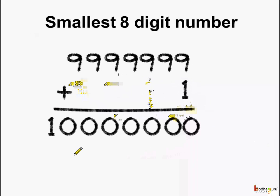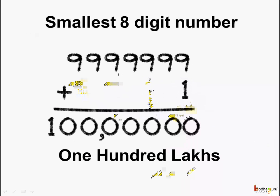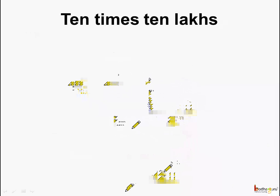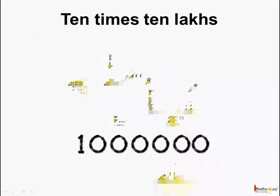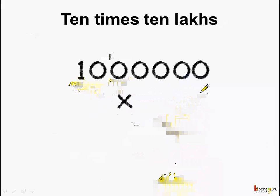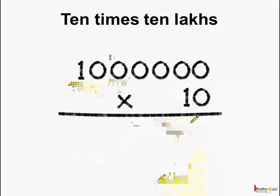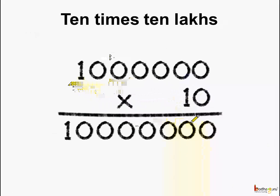And what do we call it? If we see, it is equal to 100 lakhs. And what do we call 100 lakhs? We call it 1 crore. So remember, children: 100 lakhs means 1 crore. We can also write it as 10 times 10 lakhs. So if we have 10 lakhs and multiply by 10, we get 100 lakhs, which is equal to 1 crore.